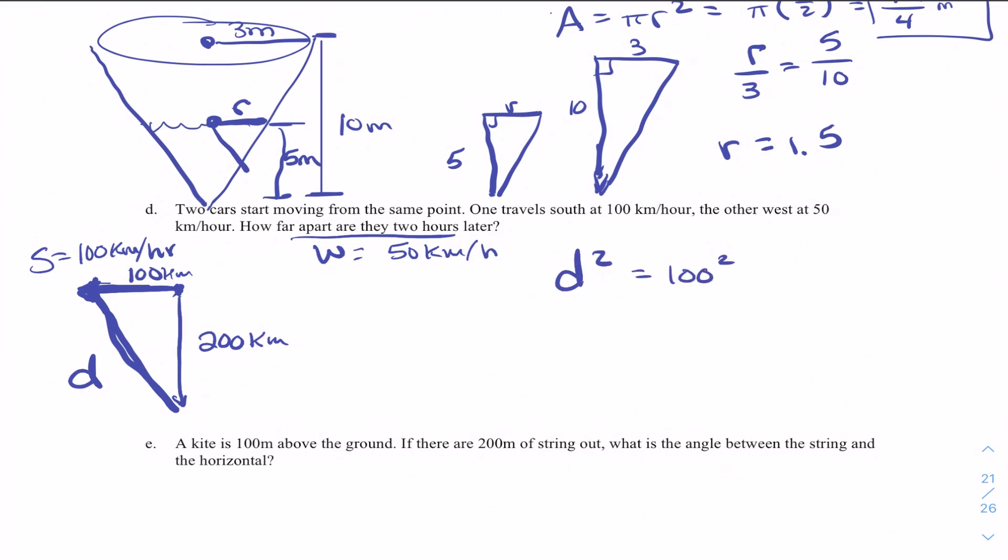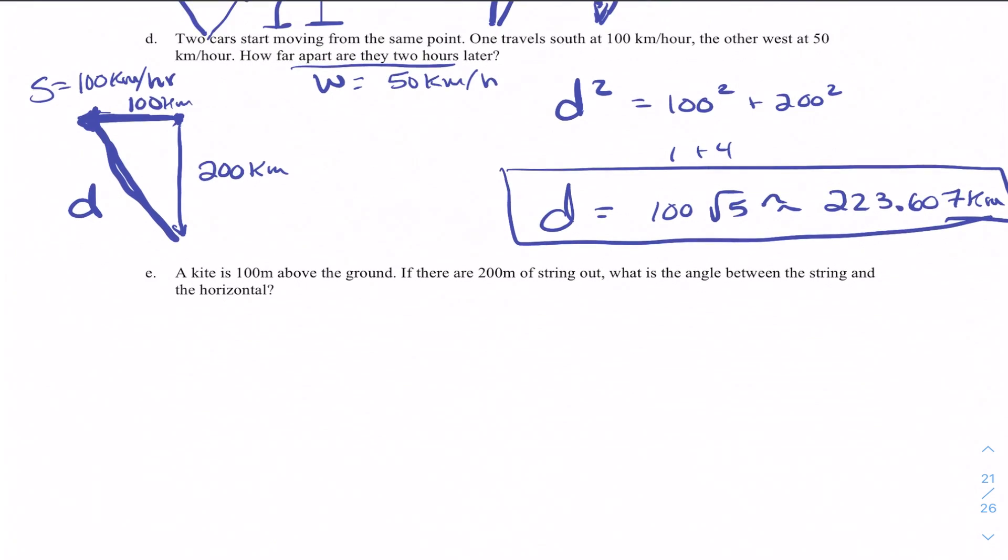And that's just a Pythagorean theorem problem. d squared is equal to 100 squared plus 200 squared, which is similar to 1 plus 4, or the square root of 5. Only in this case we'll have 100 square root of 5, which is approximately 223.607 kilometers. If you take the square root of both of those. So this is where you could use a calculator. I don't have one to save time for you guys. So let's just keep moving.